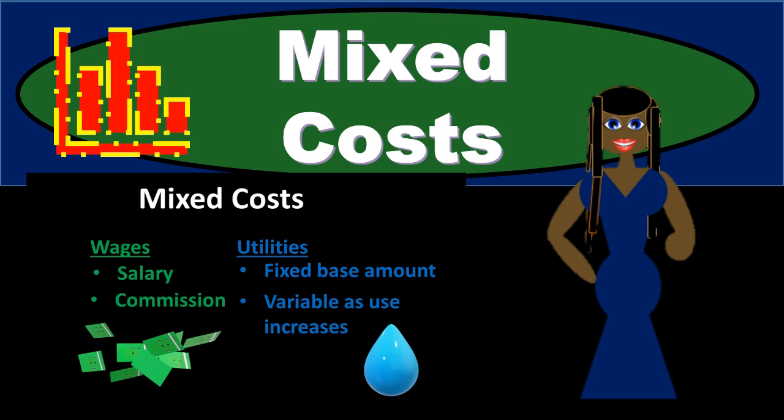In this presentation we will discuss mixed costs. In prior presentations we discussed the concept of breaking out costs — not how we normally see them on the income statement by their function or purpose, but instead by behavior, by how they act. We grouped things into two standard categories: variable costs and fixed costs.